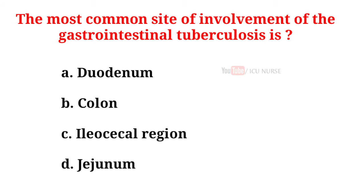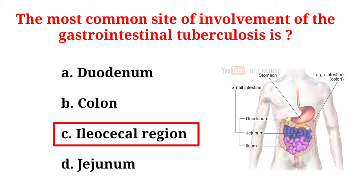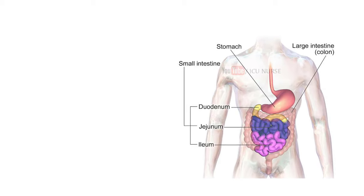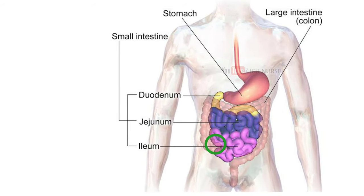The most common site of involvement of gastrointestinal tuberculosis is: A. Duodenum. B. Colon. C. Ileocecal region. D. Jejunum. And the correct answer is C. Ileocecal region. The most common site of gastrointestinal tuberculosis is the ileocecal location, followed by jejunum and colon. The esophagus, stomach, and duodenum are rarely involved.